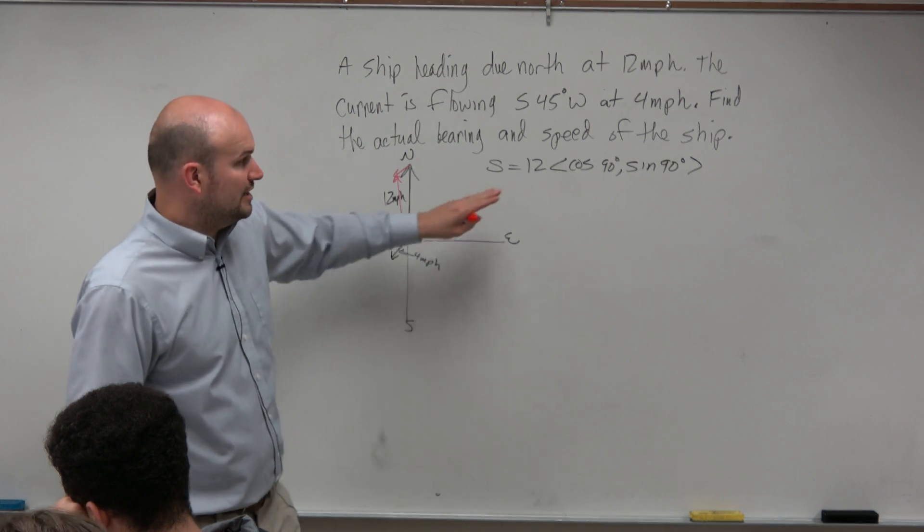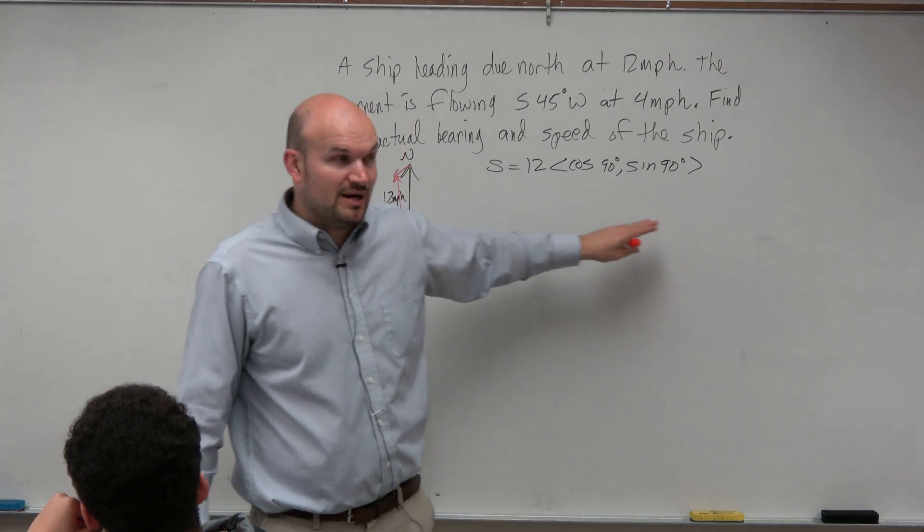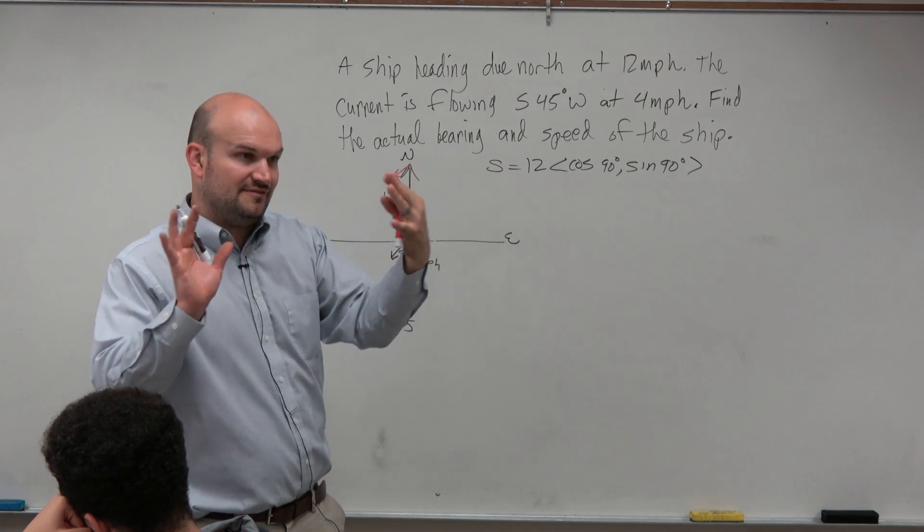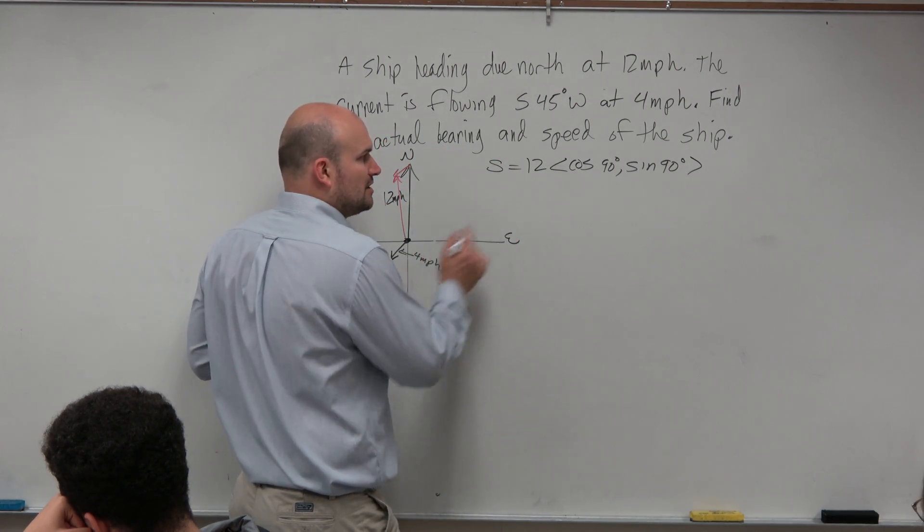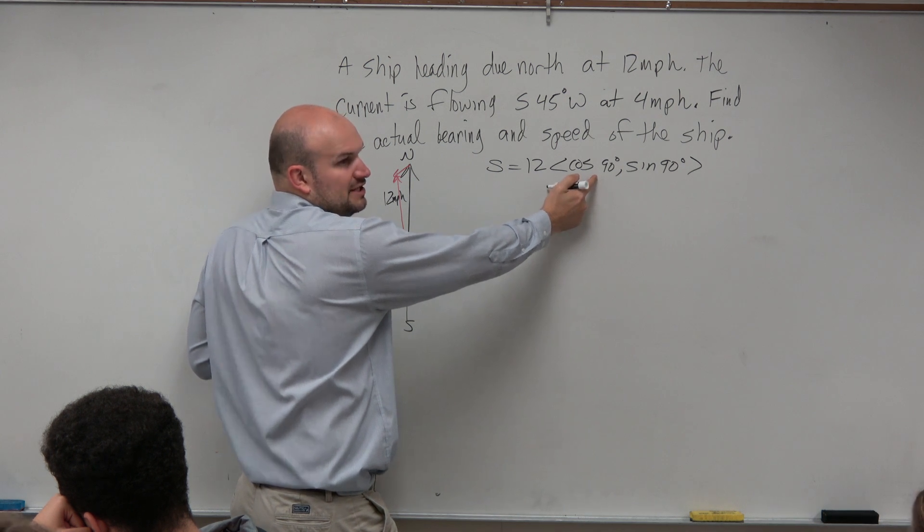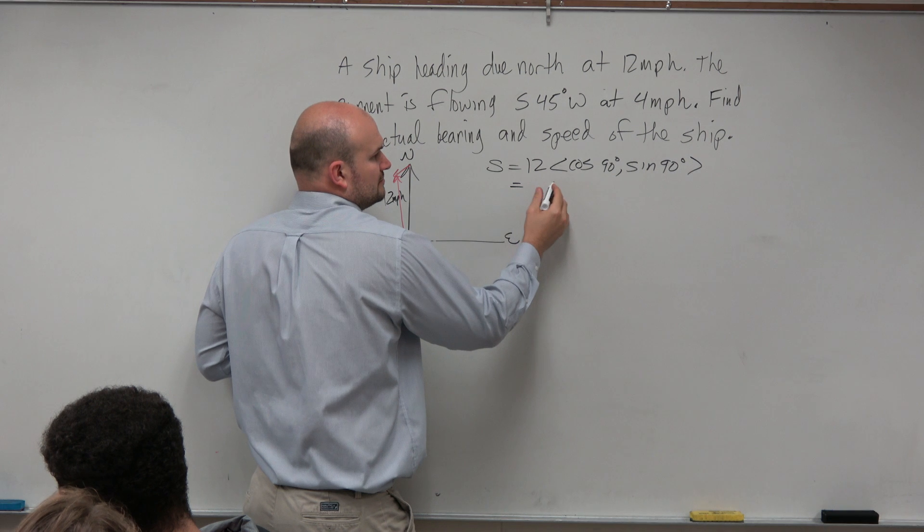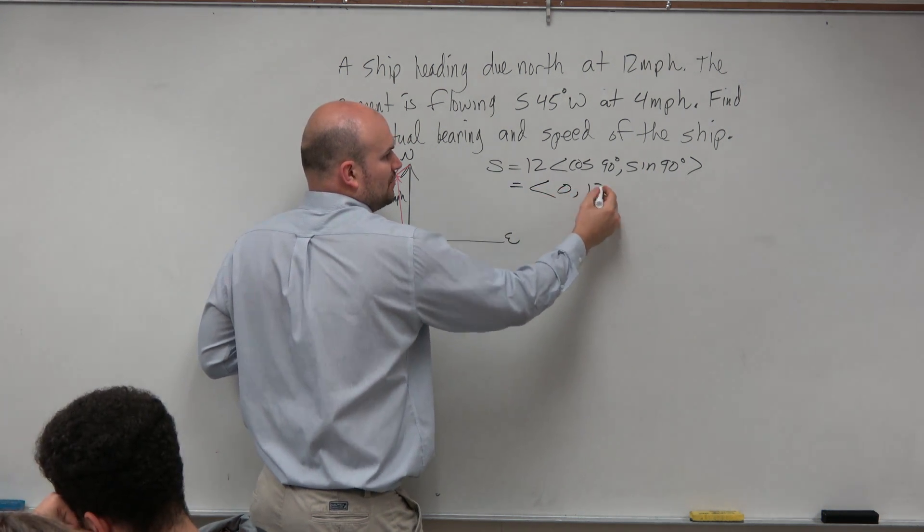Now, I could calculate that if I wanted to, because this one isn't that bad to calculate. Typically, though, a lot of times, it's just easier to leave things in your calculator and let your calculator do all the work. But this isn't bad, because we know in the unit circle, that's 0 and that's 1, right? And then you could multiply that, so it'd be 0 comma 12.